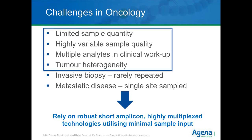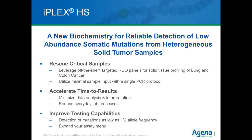We can further break down these challenges. Limited quantity, variable quality, multiple analytes, and heterogeneity can be improved by using robust short amplicon technologies that are highly multiplexed and use small amounts of sample input, such as our IPLEX-HS biochemistry. Our IPLEX-HS biochemistry allows us to rescue critical samples that couldn't be analyzed on alternative technologies — robust, short amplicon, highly multiplexed, with low input material. We have very short turnaround time: less than eight hours from DNA to result, and a simplified lab workflow that any general clinical laboratory can follow. The improved chemistry allows us to get down to 1% allele frequency detection, allowing you to test low-frequency, low-tumor content samples and expand your assay menu.